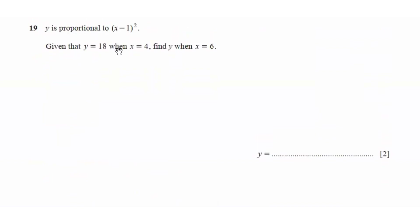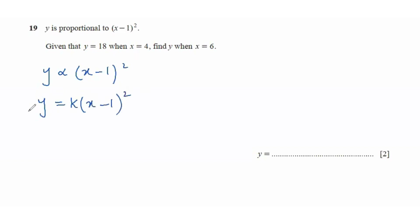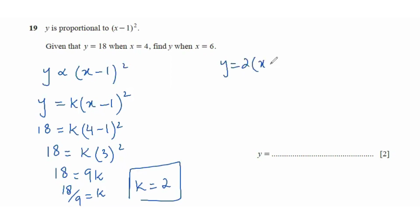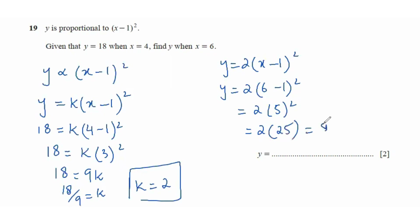Question 19: y is proportional to (x minus 1) squared, so y equals k times (x minus 1) squared. Given y equals 18 when x equals 4: 18 equals k times 3 squared, so 18 equals 9k, giving k equals 2. Then y equals 2 times (x minus 1) squared. When x equals 6: y equals 2 times 5 squared, which is 2 times 25, equal to 50.